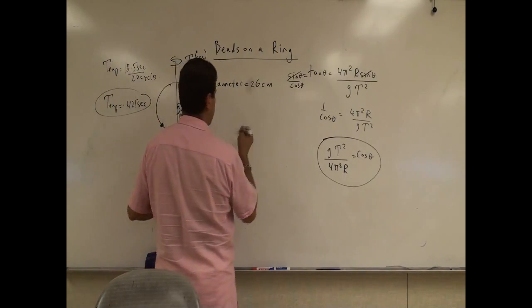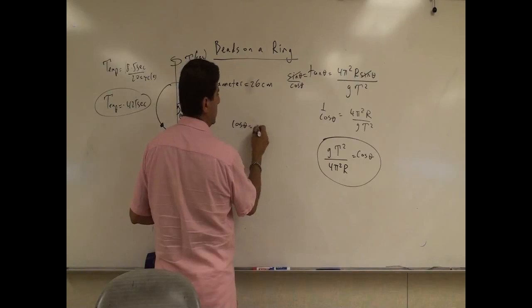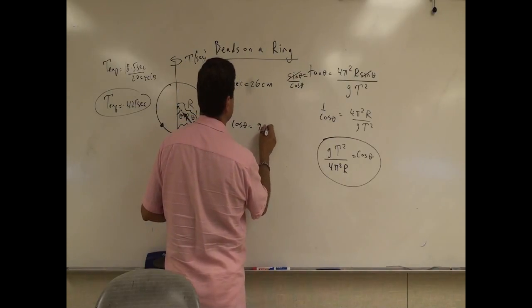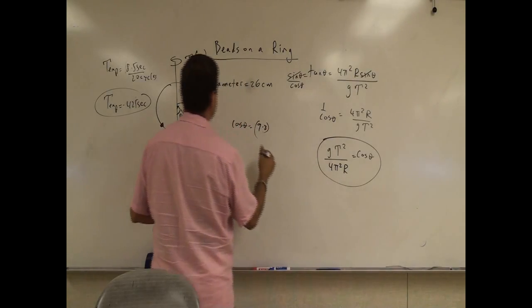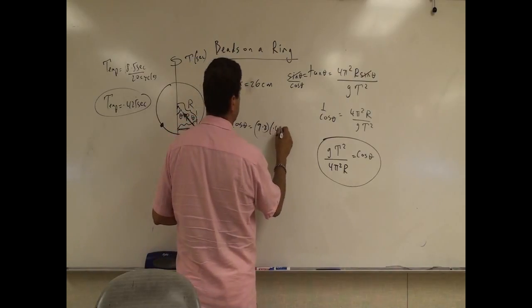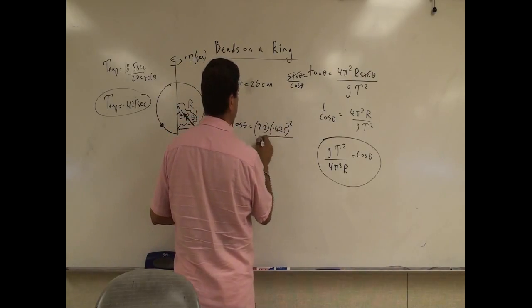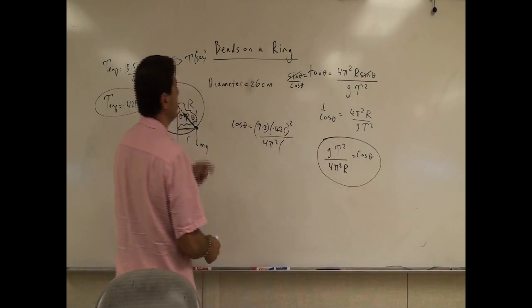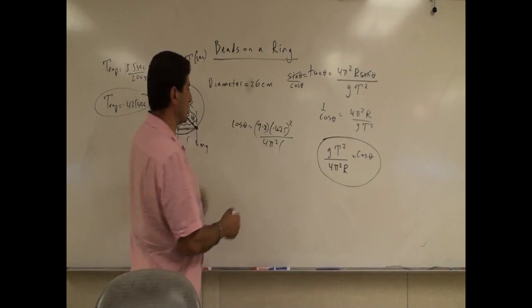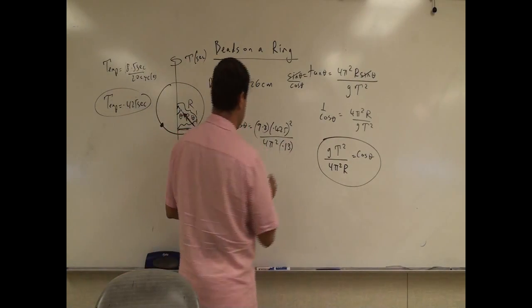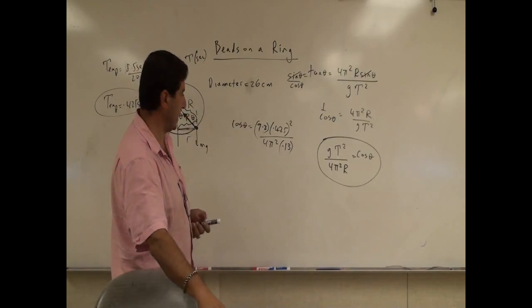Okay, so we have here cosine, this is 9.8. So the period is going to be 0.425 squared over 4 pi squared, and then the r is going to be half the diameter of the ring, so that's 0.13. So let us calculate that.